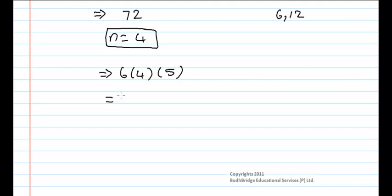6 times 5. 6 into 4 is 24, 24 into 5 that is 120. So 120 is divisible with 6, 12 but not with 18.